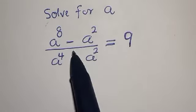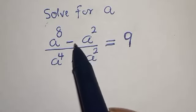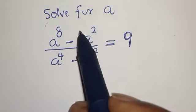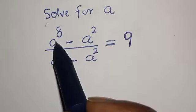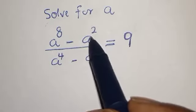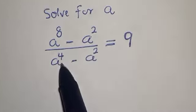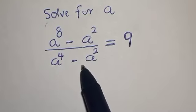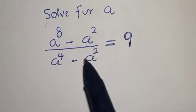Hello, welcome to Magist. In this class, we want to look at how we can quickly solve for a from this given equation: a raised to power 8 minus a squared, divided by a raised to power 4 minus a squared, is equal to 9.